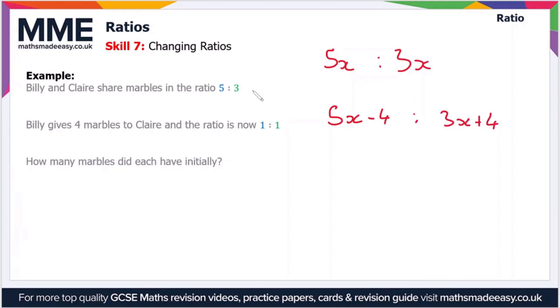So using the information in the question we know that this ratio is now 1 to 1. So this ratio that we've just written 5x minus 4 to 3x plus 4 is equal to 1 to 1.